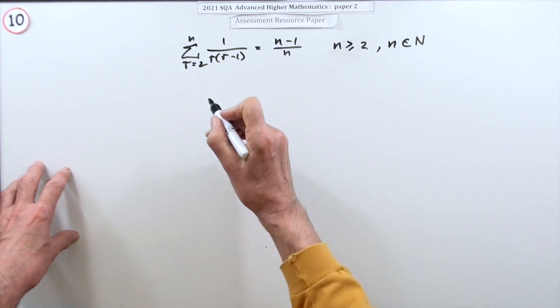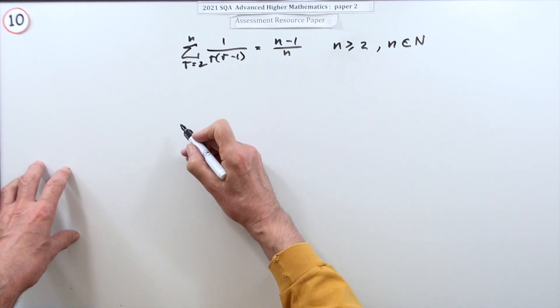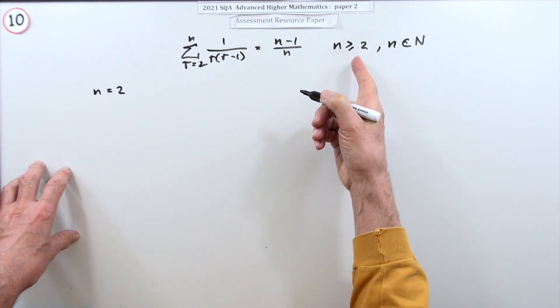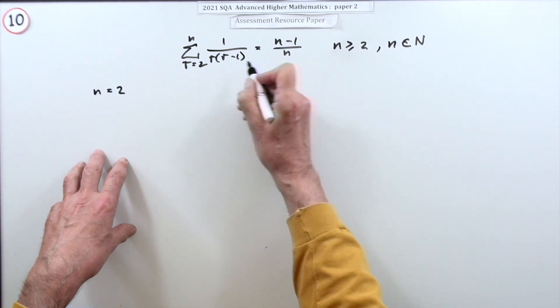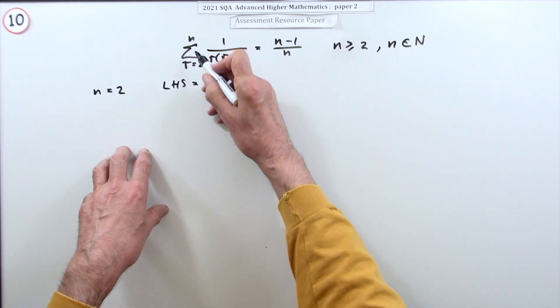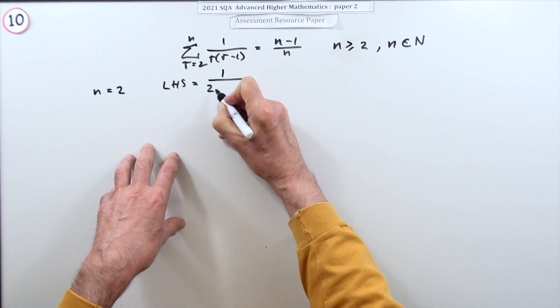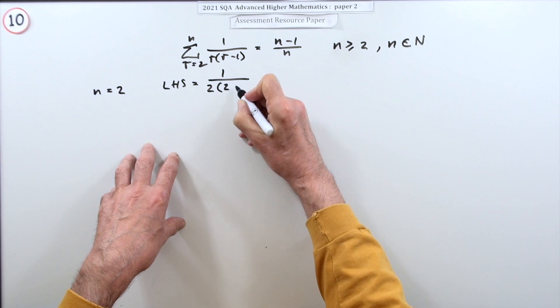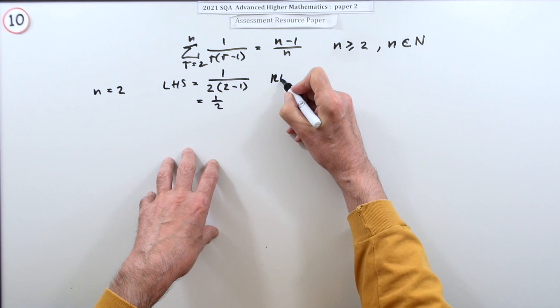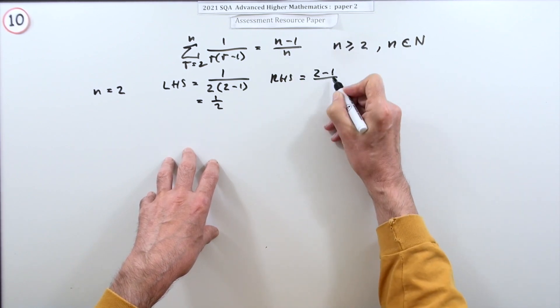You start off by finding that it definitely is true somewhere, preferably at the very start. So you consider n equals two because that's the lowest n can be. Let's see if this works. Take the left hand side - the left hand side would be two to two, so it's just going to be a two going in there, so you've got one over two times two minus one, that's one over two.